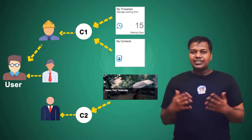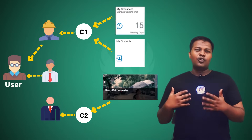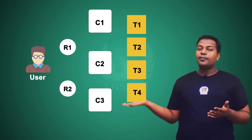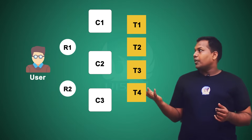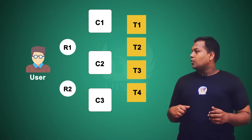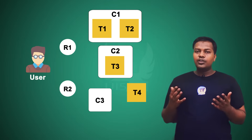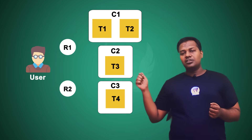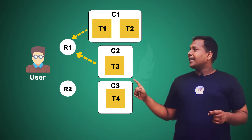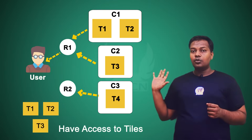Let's simplify the scenario with one level of abstraction. We have a user, roles R1 and R2, catalogs C1, C2, and C3, and tiles T1, T2, T3, and T4. Tile T1 and T2 are assigned to catalog C1, tile T3 to catalog C2, and tile T4 to catalog C3. Catalogs C1 and C2 are given to role R1, and catalog C3 is given to role R2. The user is given only role R1, not role R2.